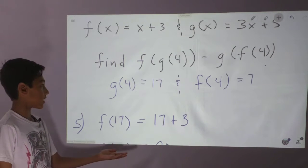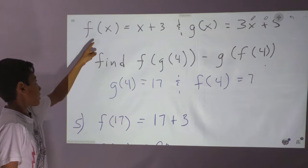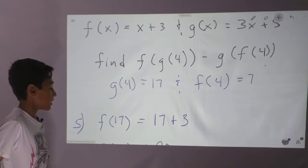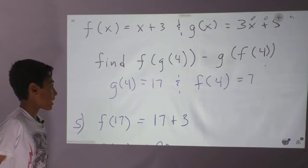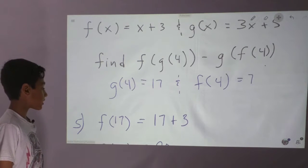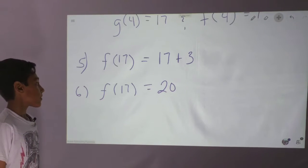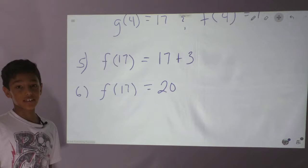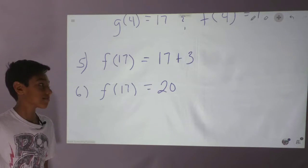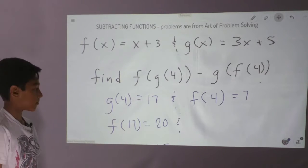So for f of 17, the function for f is f of x equals x plus 3. So we plug in 17 for x, and we get f of 17 equals 17 plus 3. And 17 plus 3 is 20. So f of 17 equals 20. Now we go to our next step.